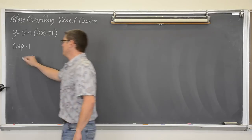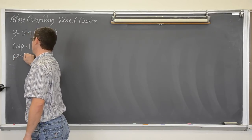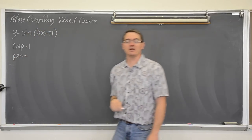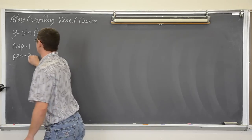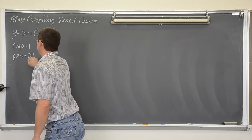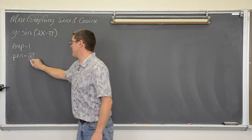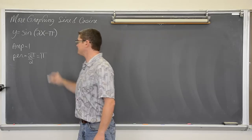The period of sine, cosine, secant, and cosecant is 2π divided by b, where b is the number in front of the x. So it is 2π divided by 2, which is π.